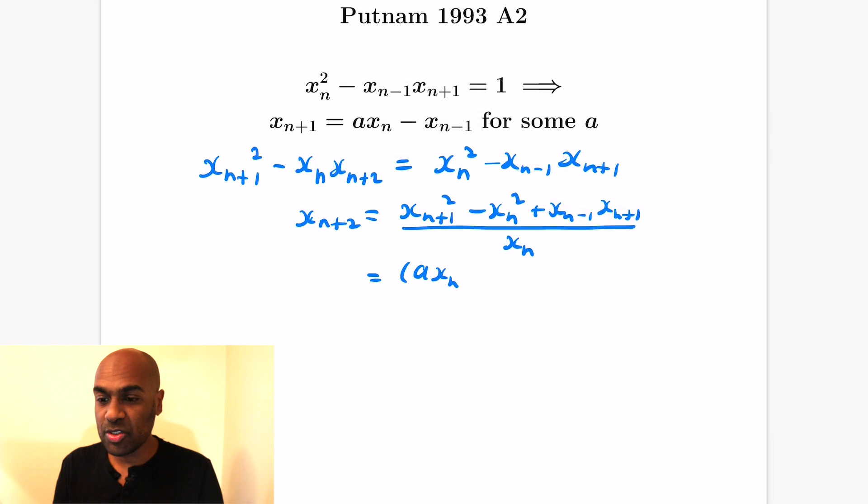Now we can substitute in for x_{n+1} what we have in the recurrence equation. We have a times x_n minus x_{n-1} all squared minus x_n squared, and then minus x_{n-1} times again using the recurrence equation a times x_n minus x_{n-1}, and this is all going to be divided by x_n itself.